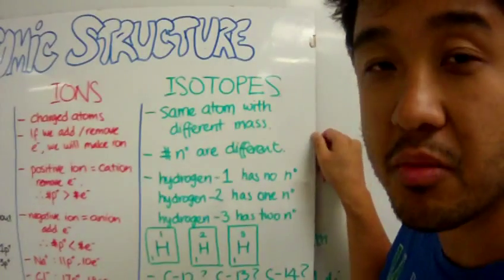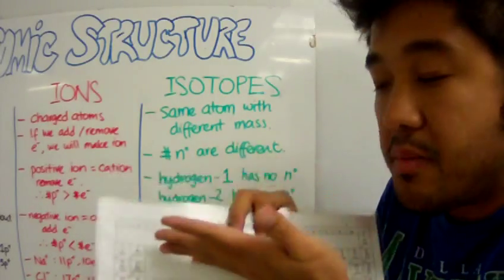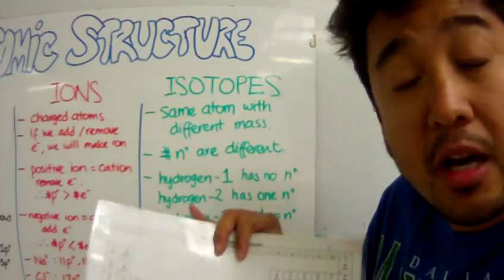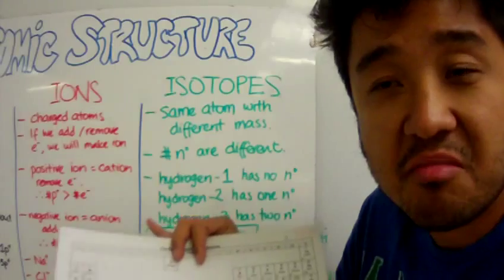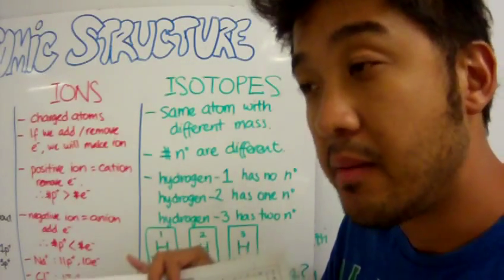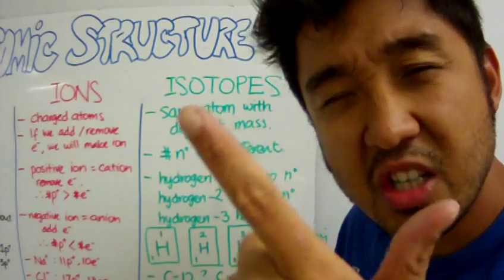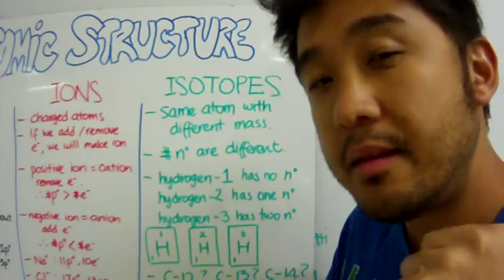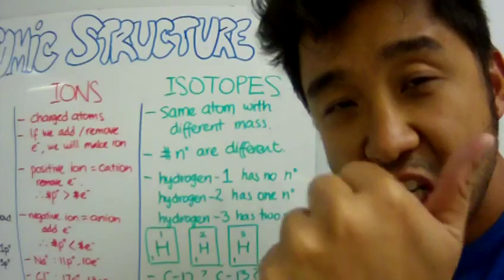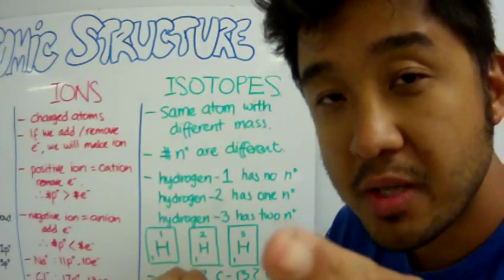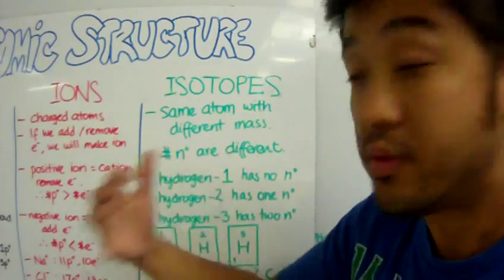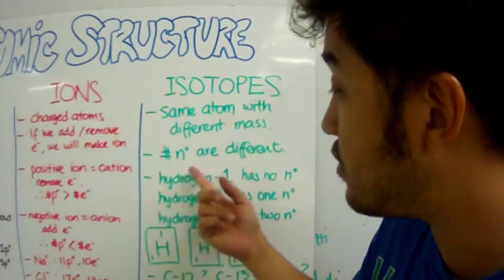Let's finally look at isotopes. Remember, atoms are determined by the number of protons — by the atomic or proton number. It turns out in nature there are atoms of the same type or kind, like hydrogen, but hydrogen comes in different masses. The mass of an atom is determined by the number of protons and the number of neutrons. When we must maintain the same number of protons, the only other variable that we can change is the number of neutrons. So that's what isotopes are — it's a new word meaning the same kind of atom, like hydrogen atoms, but with different mass. That means the number of neutrons are different.